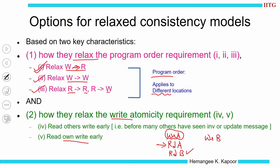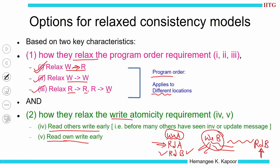Sequential consistency says you can do this read B provided the effect of the write B has percolated everywhere in the system and it has finished — only then you can do read B. This read B is reading others' write early because somebody else wrote B and I am reading it. So we have: read others' write and read own write — these are the two concepts for write atomicity, giving us two options.